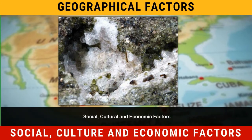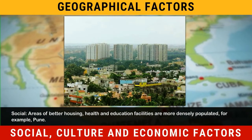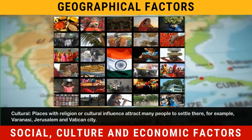Diamond mines of South Africa and oil wells in the Middle East led to settling of people in these areas. Social, cultural and economic factors: Social — areas with better housing, health and education facilities are more densely populated. For example, Pune.